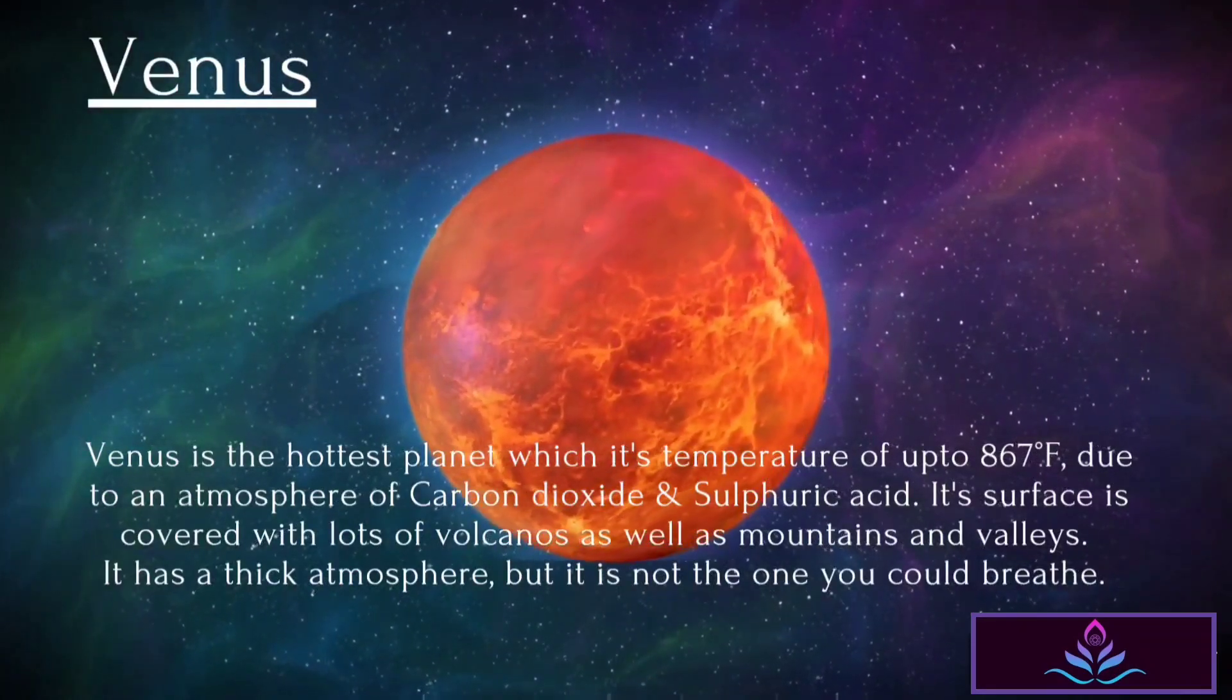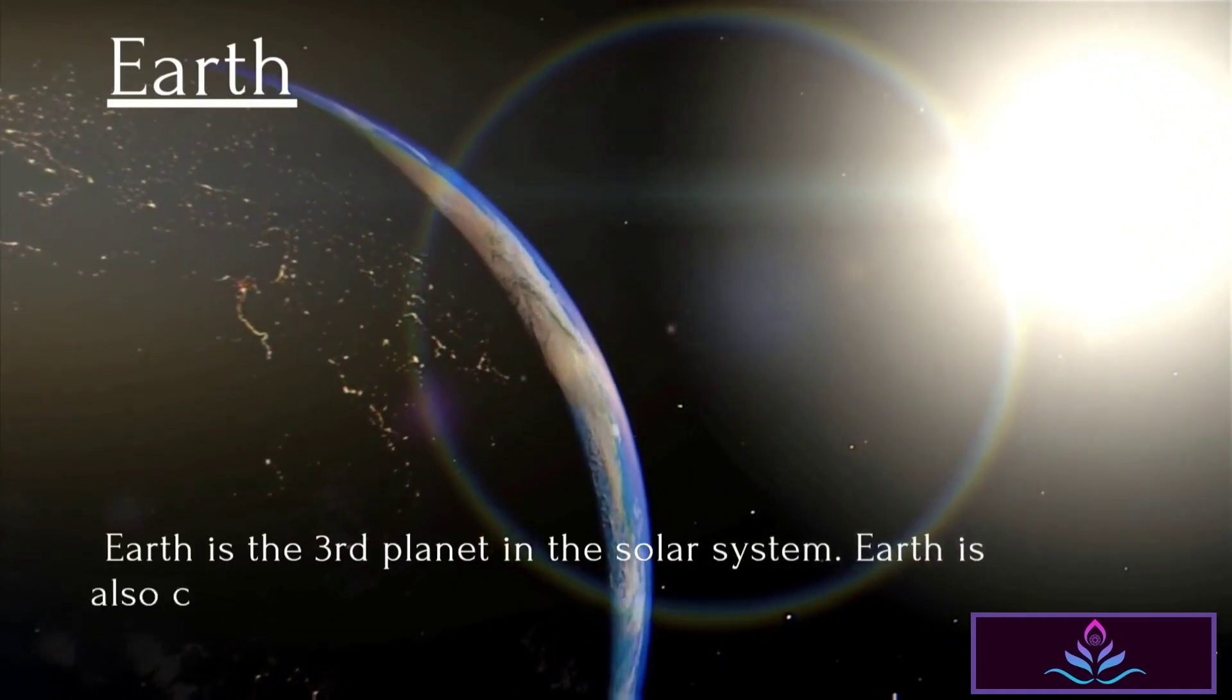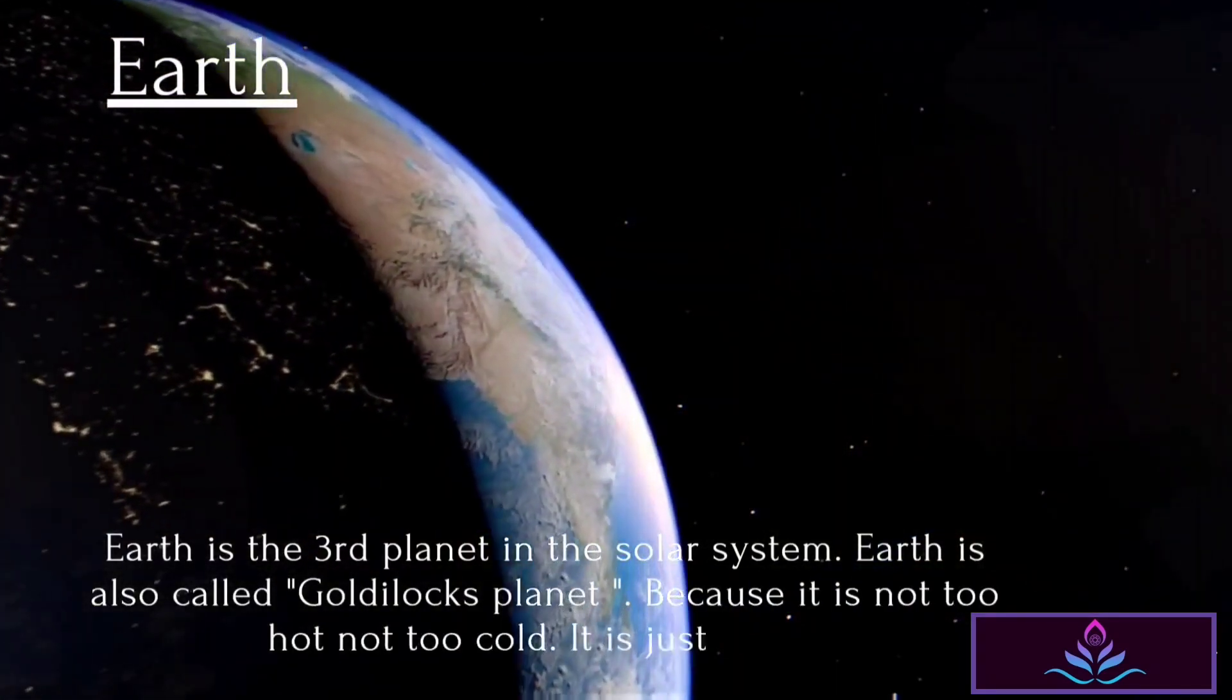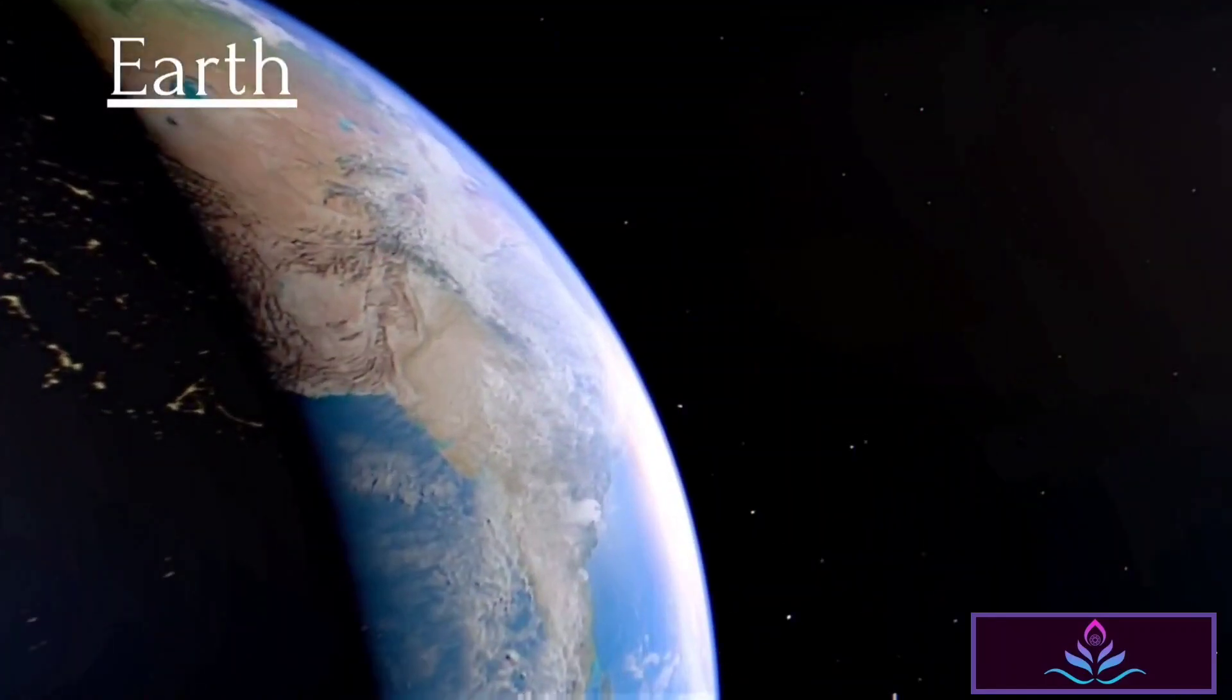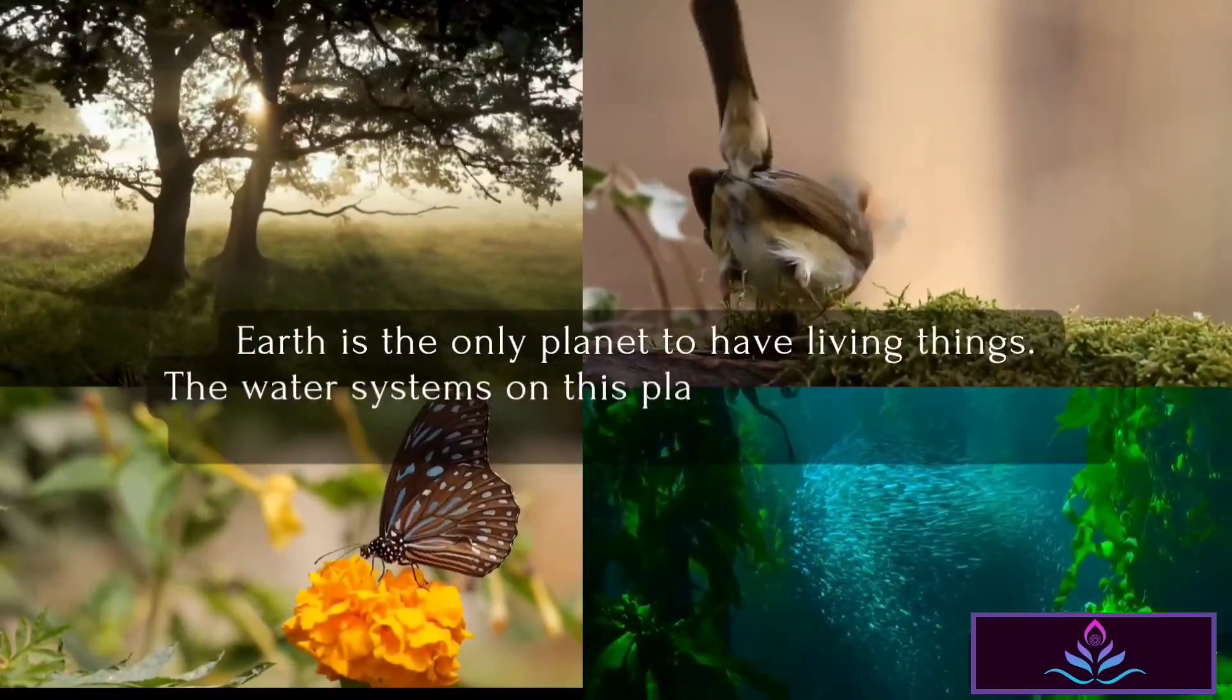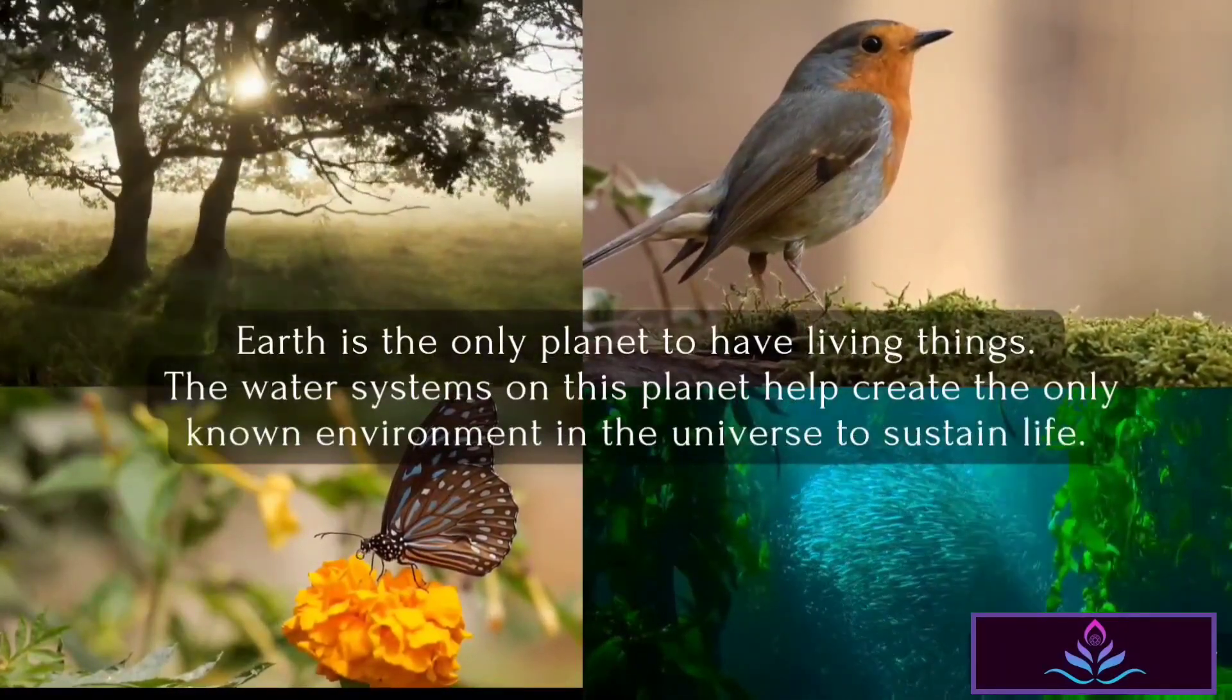Earth is the third planet in the solar system. Earth is also called the Goldilocks planet because it is not too hot, not too cold—it is just right. Earth is the only planet to have living things. The water systems on this planet help create the only known environment in the universe to sustain life.